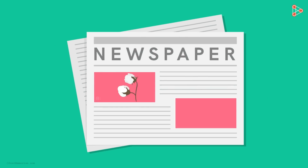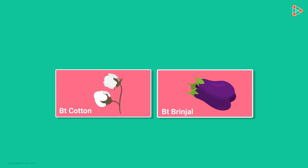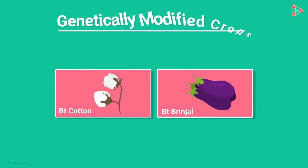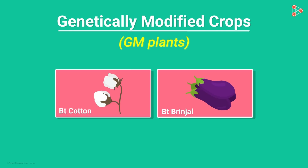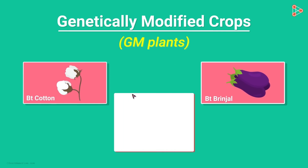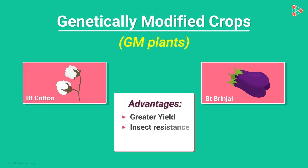A few years back, news headlines mentioned names like BT Cotton, BT Brinjal and so on, and even the markets were flooded with them. They are genetically modified crops, abbreviated as GM plants. We have heard about them several times — these plants are the modified versions of the original variety. Modifications in the plants add many advantages like greater yield, insect resistance, nutritional value and so on.